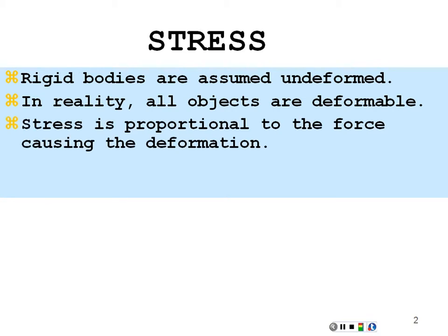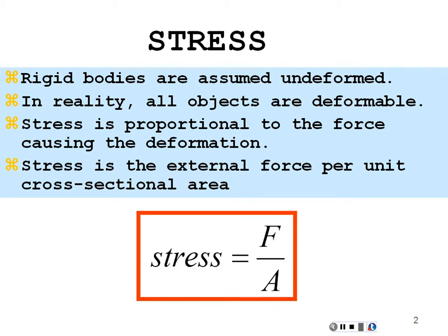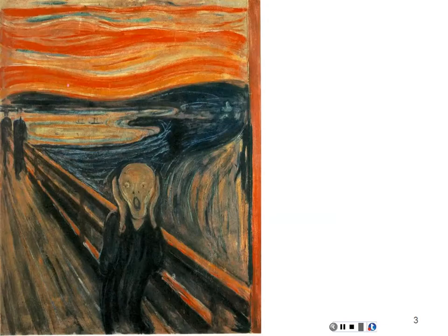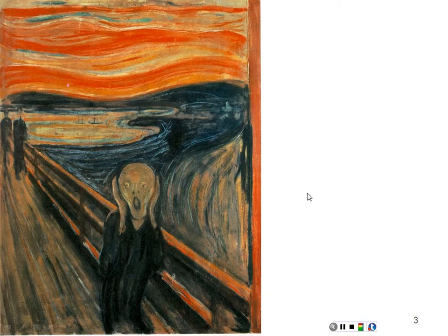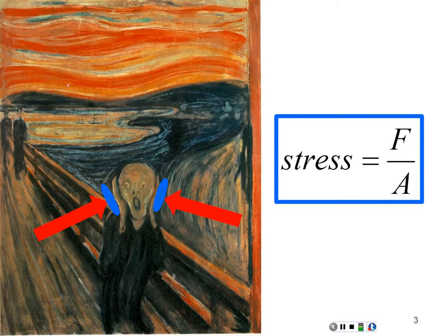It turns out that stress is proportional to the force causing the deformation. It is, in fact, the force per unit cross-sectional area. So if I apply a force on an area, I define stress as the force per area. Or I could apply a force along the length of this meter stick per cross-sectional area, and that would be a stress along the length of the meter stick. This person is obviously under stress — they're applying a force on a cross-sectional area. Force per area is indeed a stress. That's how we define it.